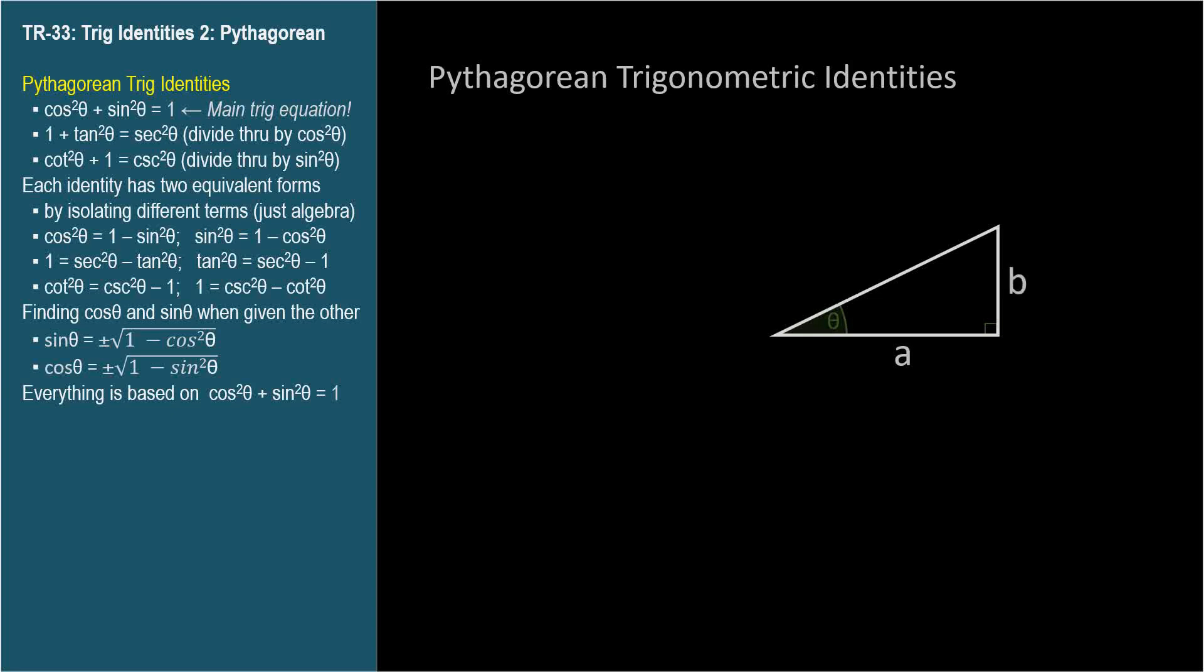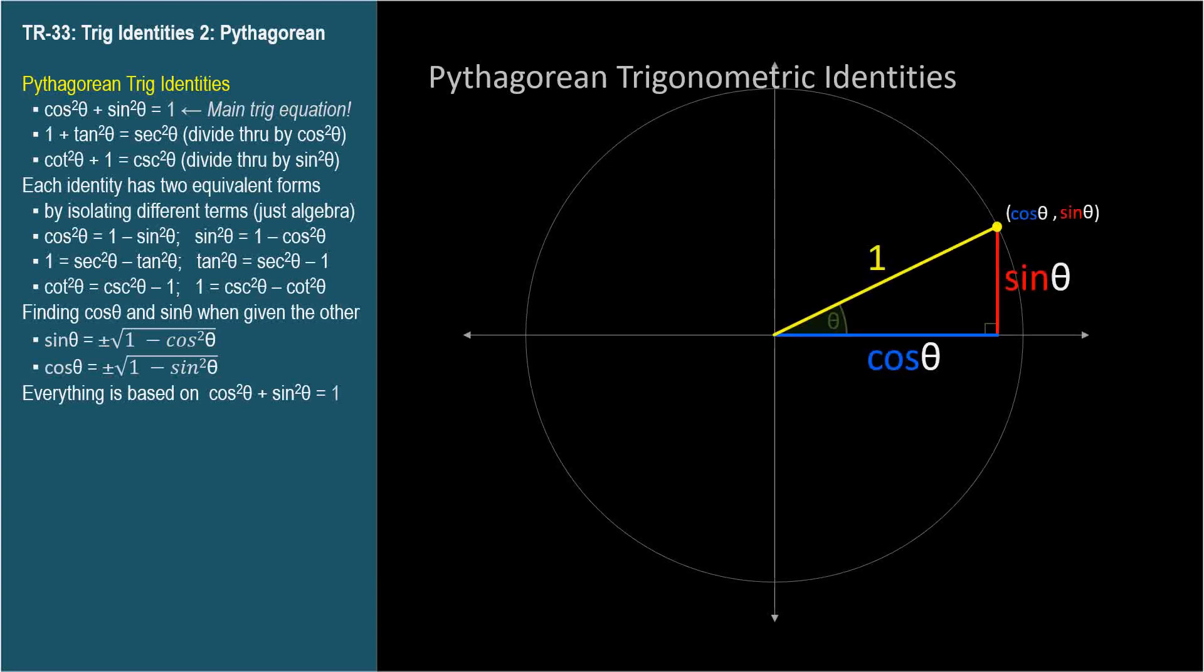For a right triangle with sides of length a, b, and a hypotenuse c, the equation a squared plus b squared equals c squared is always true. So let's apply the Pythagorean theorem to the unit circle. We get cosine squared theta plus sine squared theta equals 1.